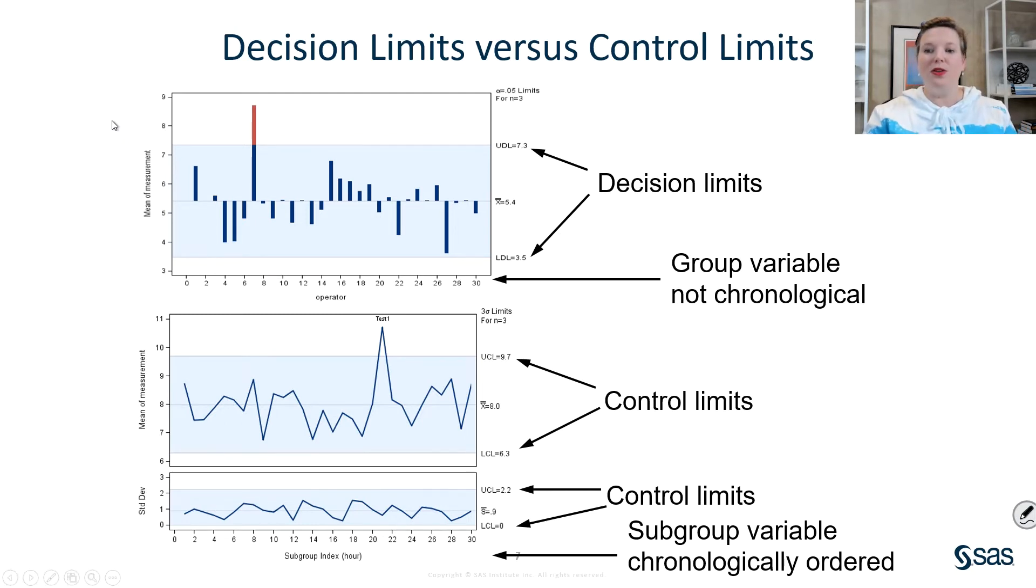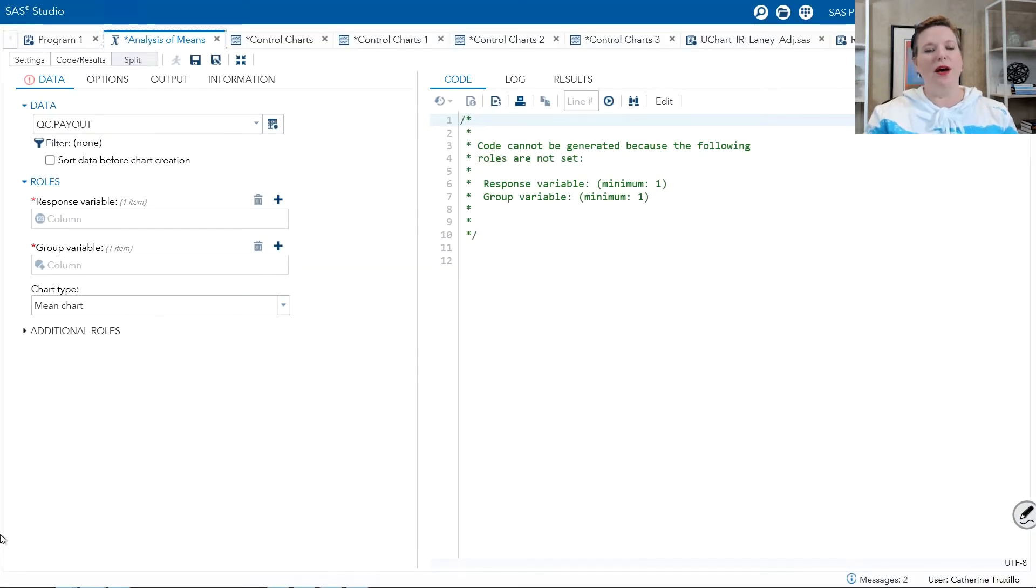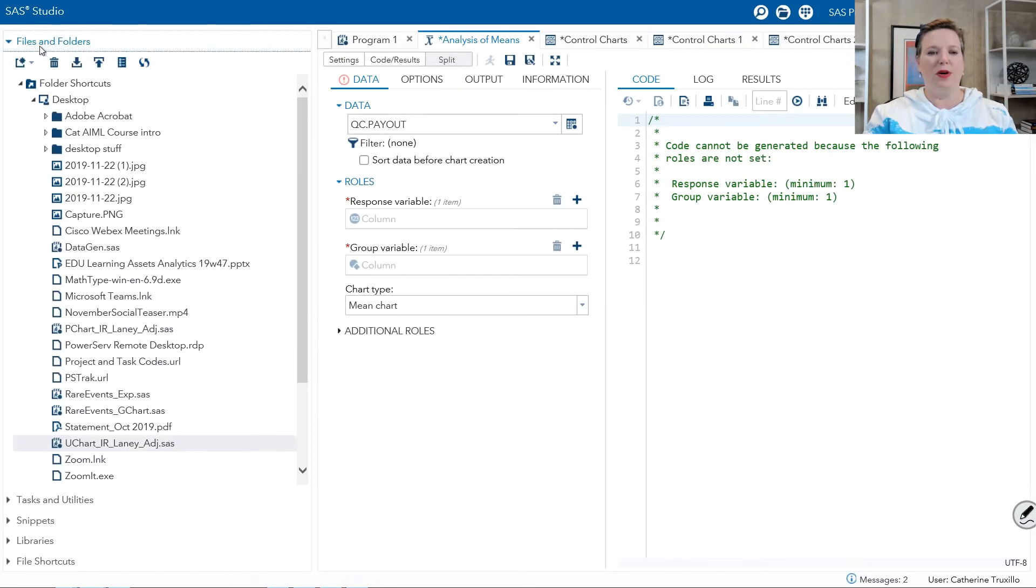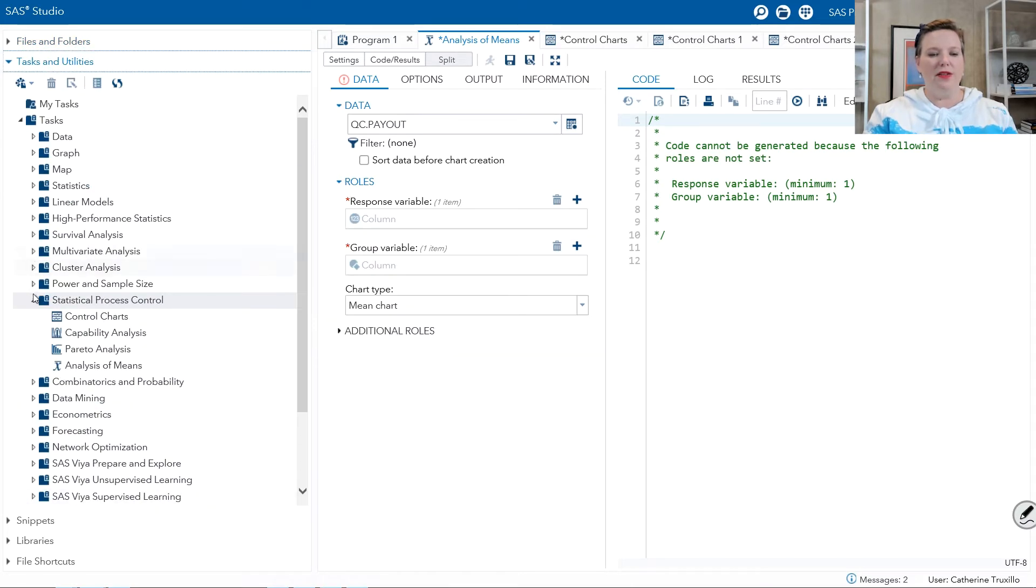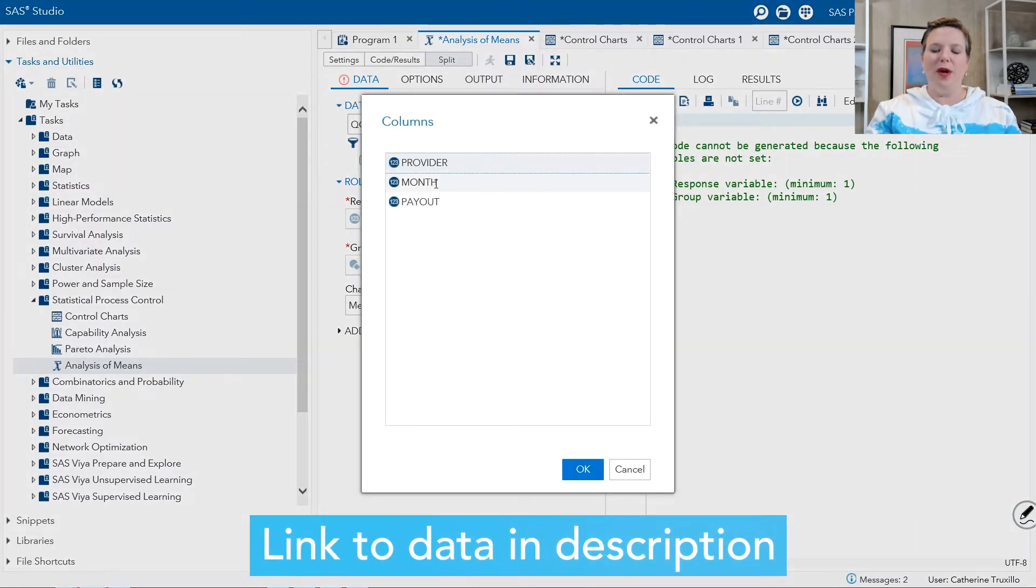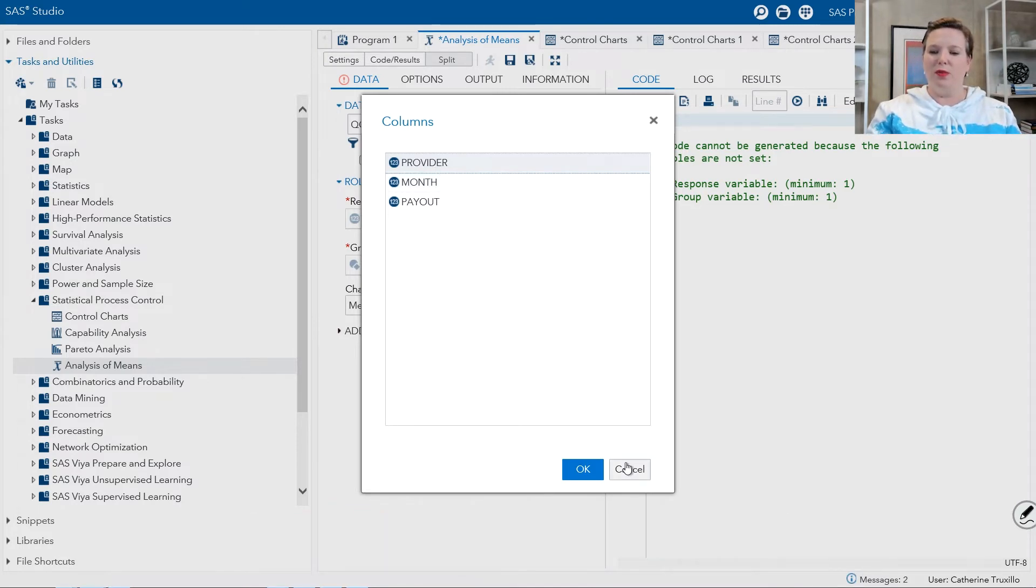So let me show you how to do analysis of means in SAS. We are in SAS Studio, and what I've done to get here, if you haven't used SAS Studio before, you might not be familiar with this part of the menu system. In SAS Studio, under Tasks and Utilities, Statistical Process Control, Analysis of Means. Double-click that, and I've already got one opened up. So the Analysis of Means task will generate code for you, and it tells you on the right side that it can't generate code until you set a response variable and a group variable. This is a data set called payout, and in this payout, we have how much money is being paid out to different providers of services. So we're going to specify that the response variable is the payout amount, and the group variable is the provider.